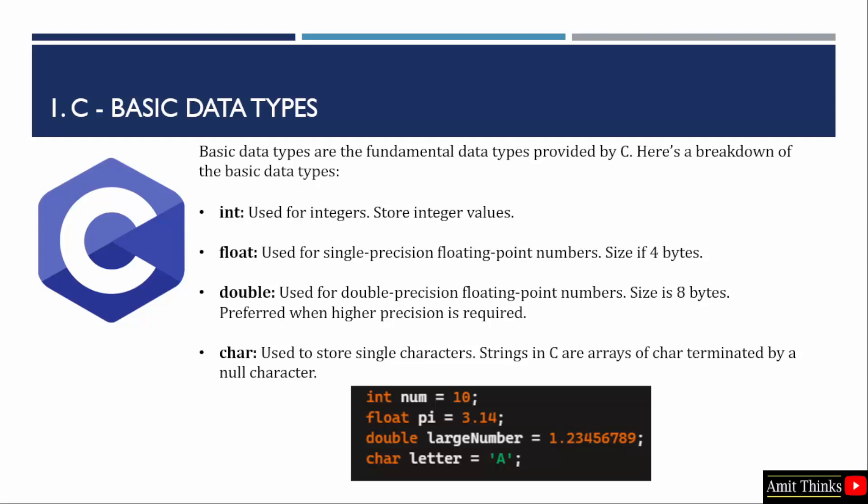Basic data types are the fundamental data types in C. Beginning with int. As the name suggests, int is integer. The int data type in C is used to store integer values which are whole numbers without any decimal points. It is one of the fundamental data types provided by the C language and is widely used in various programming scenarios. It is used for integers to store integer values. The size of int can vary depending on the system architecture but it is typically 4 bytes, 32 bits on most modern systems.